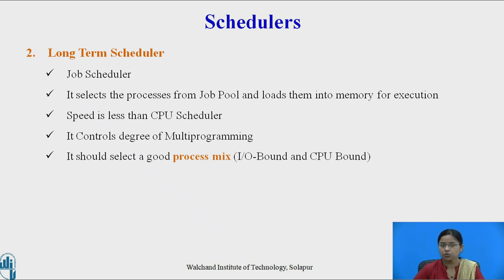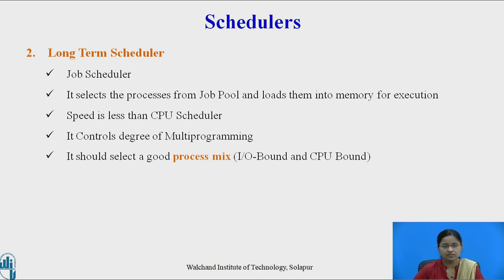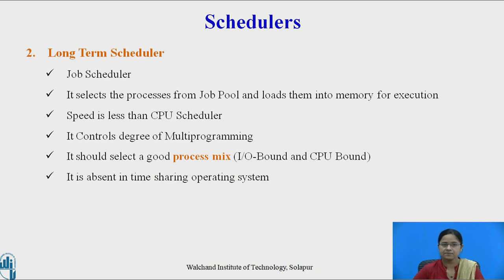The long-term scheduler must select a good process mix of IO-bound and CPU-bound processes. IO-bound processes are those that use maximum time for IO operations, while CPU-bound processes use maximum time for computation. If the long-term scheduler selects only CPU-bound processes, the IO queue may remain empty; if it selects maximum IO-bound processes, the ready queue may remain empty. Since maximum CPU utilization is the goal, the long-term scheduler must select a proper combination of IO-bound and CPU-bound processes. The long-term scheduler is absent in time-sharing operating systems.